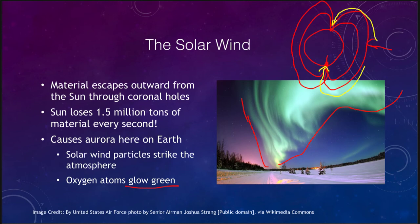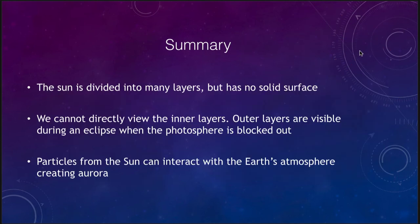So let's finish up with our summary. What we've looked at this time is that the Sun is divided into many layers and we looked at a number of those, but it has no solid surface. There is no place on it to ever land, even if the high temperatures, but there is no solid surface to it. Just like Jupiter, just like the outer planets, there is nothing down below there that is solid. The Sun is completely gaseous. We cannot directly view the inner layers that we've talked about. We have to use indirect methods to be able to study them.